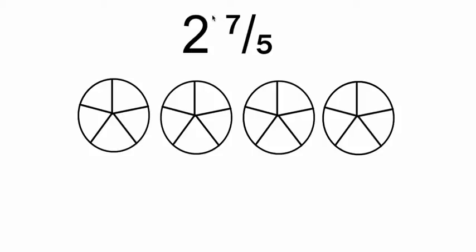On this page we have a whole number and an improper fraction — two and seven-fifths. Let's shade and see what that looks like: two and one, two, three, four, five, six, seven out of five.